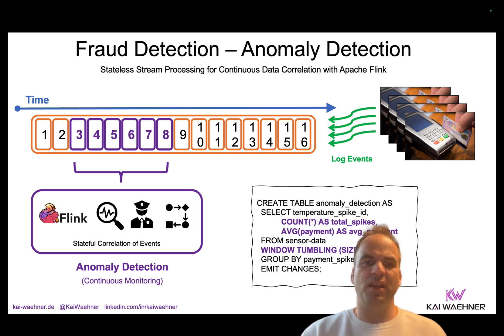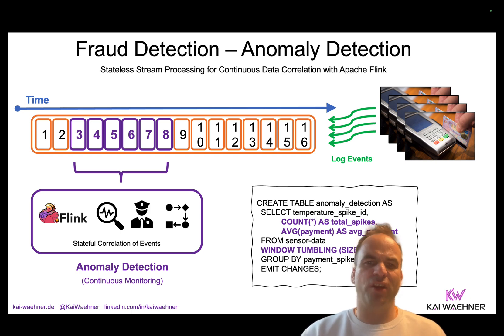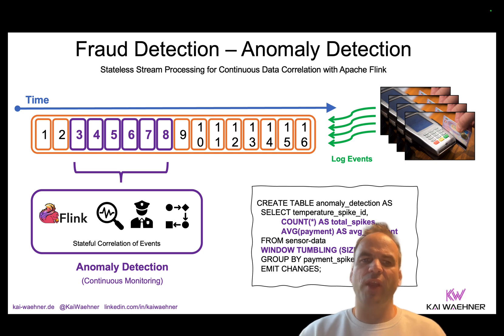This is an example for anomaly detection with continuous monitoring with state in mind. Stream processing provides many different window options you can choose from depending on your business needs. Here we see an example with Apache Flink and SQL code. Kafka Streams is Java only, while Flink supports Java, Python, and SQL. You can do stateless and stateful stream processing with both of them.